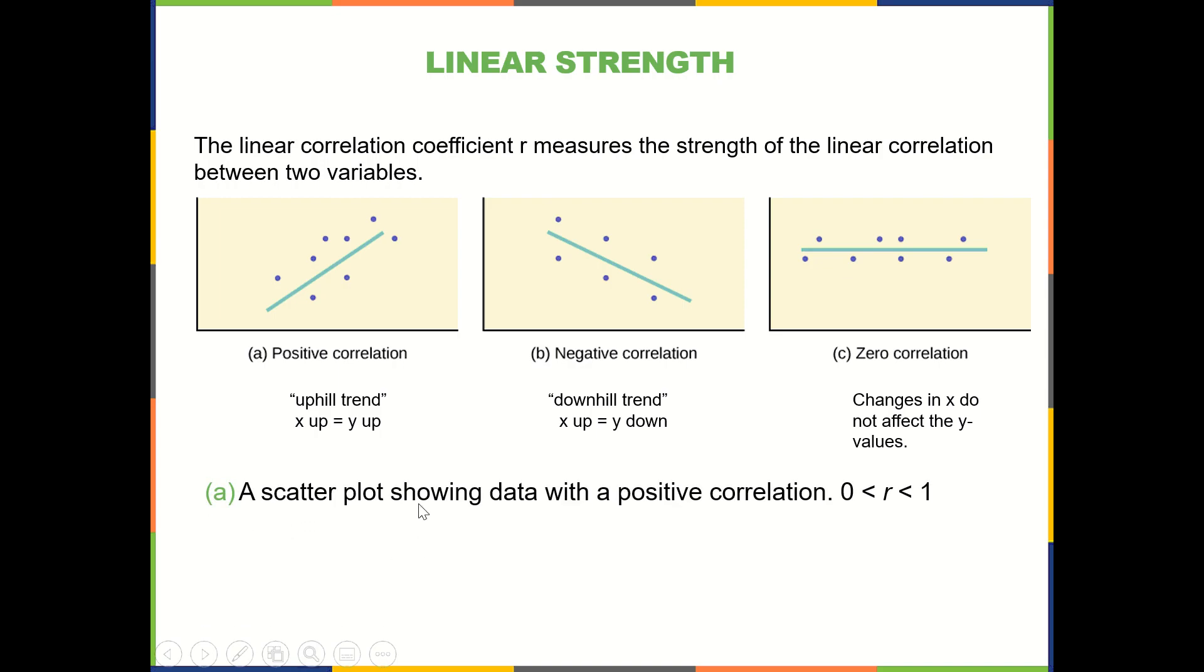A scatter plot for part a, showing positive correlation, where your correlation coefficient would be between 0 and 1. So what that means is positive and less than 1. So our values will be anywhere between negative 1 and positive 1, where positive 1 would be perfect linear correlation in the positive direction.